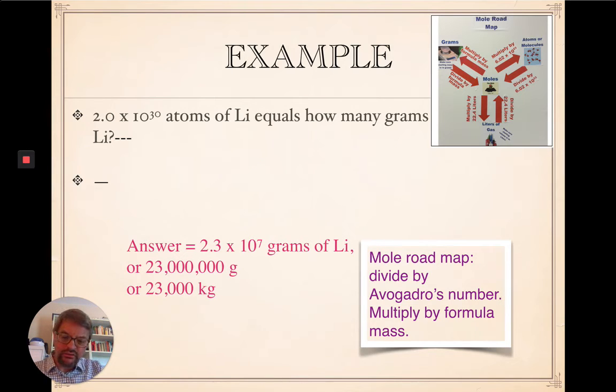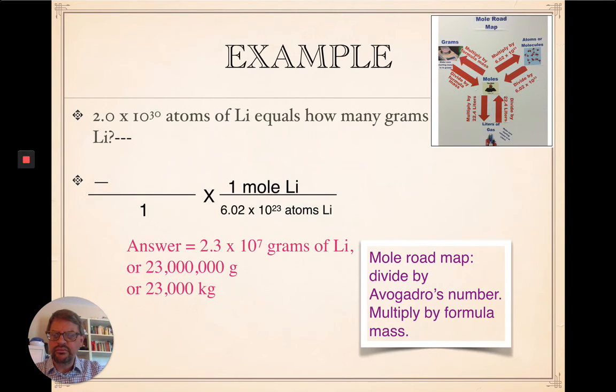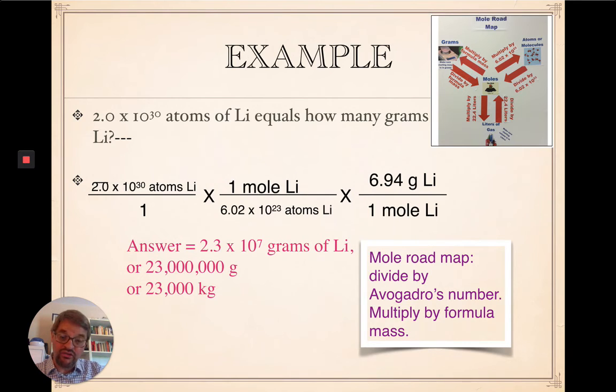Oh, look at that. Answer is also given. All right. Let me walk you through this one. So, two times 10 to the 30th atoms of lithium. How many grams of lithium would that be? So, we're in atoms, and we're going to grams of lithium. First step, divide by Avogadro's number. Now, that should look like this. I'm sorry. Two times 10 to the 30th divided by Avogadro's number.